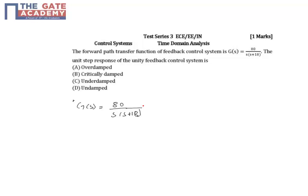We can solve this problem by taking r(s) equal to 1 by s. First we have to find the closed loop transfer function and then multiply it with 1 by s, then take the inverse Laplace to determine the kind of response. Instead of doing that, we can do it in a much simpler way.